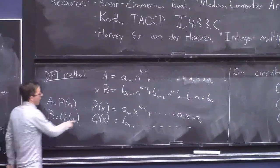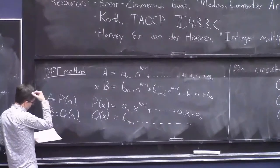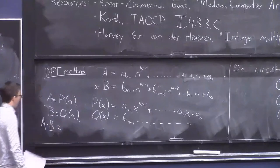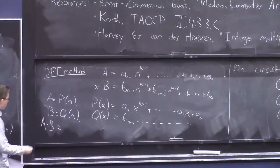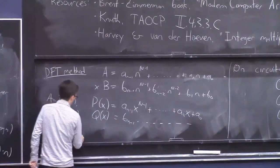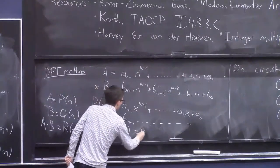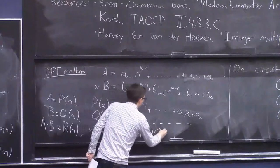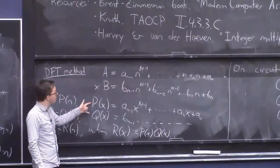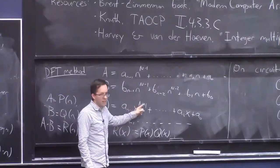So think of these as now formal polynomials. And our goal in life is to compute A times B. And that's R of n, when R of x is defined to be the product of P of x and Q of x. We can formally think about the product of these two polynomials, which is another polynomial in x of degree 2 capital N minus 2.